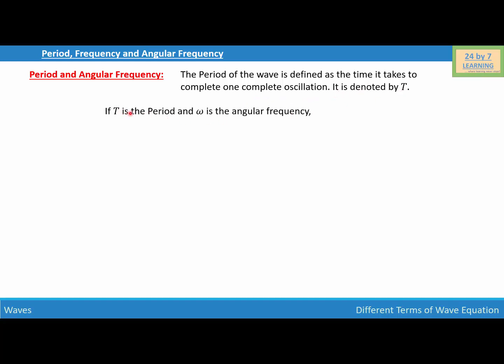If T is the period and omega is the angular frequency, then we can write T is equal to 2π over omega, where T is the period and omega is the angular frequency of the wave.